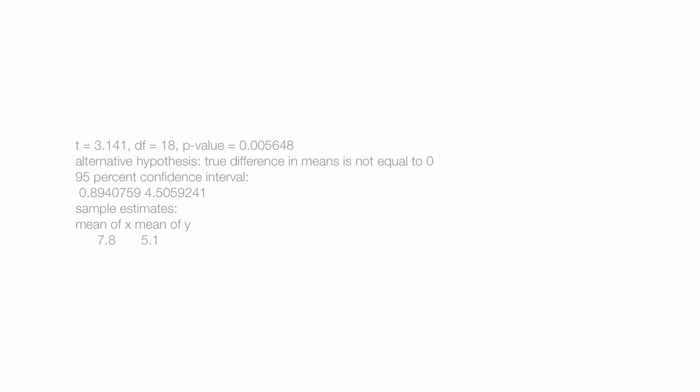RStudio, or R, generates some output. It looks like this. But what's really important is the top row of that data. You typically write your t-test results like this.